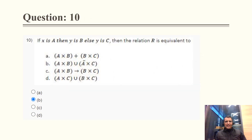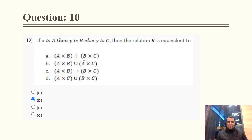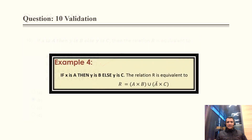Question 10: If X is A, then Y is B; else Y is C. The relation R is equivalent to what expression? This is a direct question. Option B is correct: R = (A × B) ∪ (A_complement × C). Cross-validation snapshot confirms this relation formula.